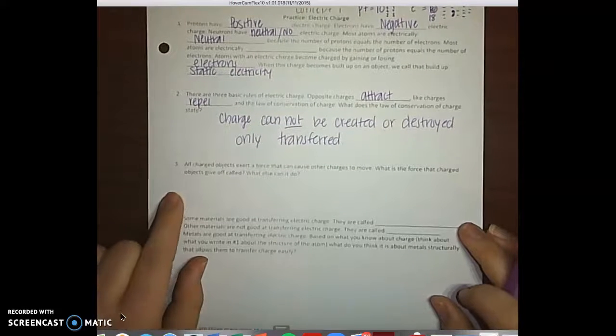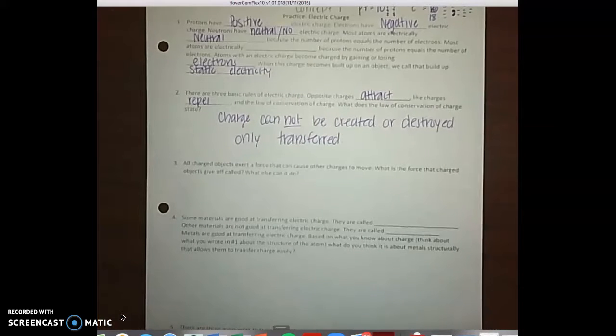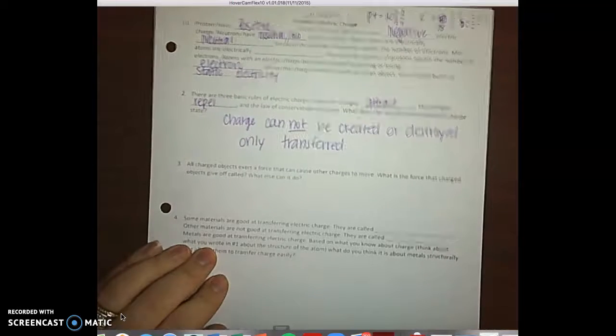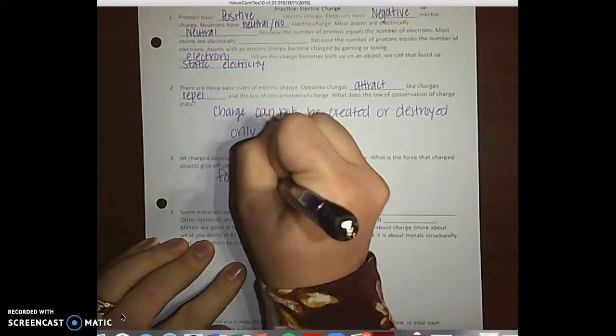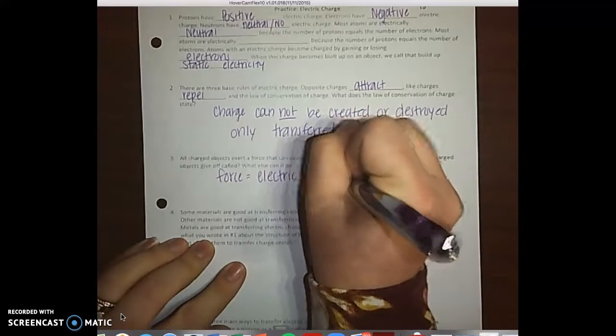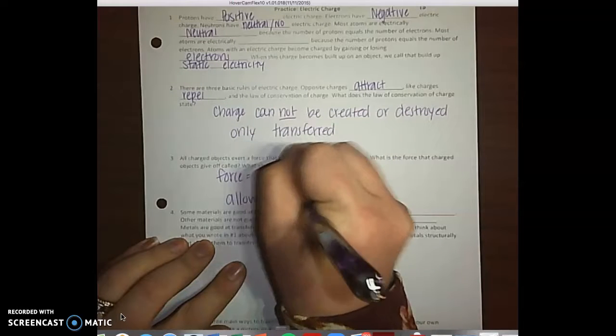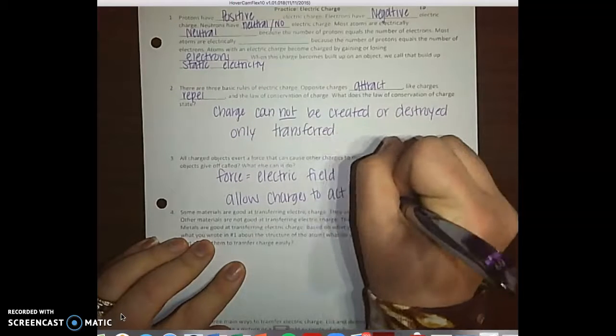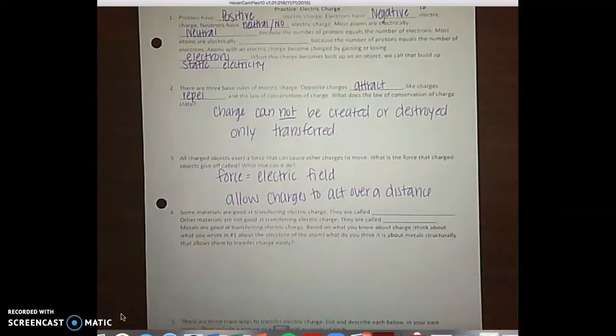Number three says all charged objects exert a force that can cause other charges to move. What is the force that charged objects give off, what else can it do? So the force is the electric field and it allows it to act over a distance. So it does not have to have direct contact, it allows it to act over a distance.